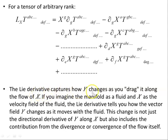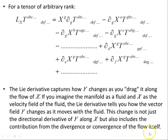The Lie derivative captures how Y changes as you drag it along the flow of X. If you imagine the manifold as a fluid and X as the velocity field of the fluid, the Lie derivative tells you how the vector field Y changes as it moves with the fluid. This change is not just the directional derivative of Y along X, but also includes the contribution from the divergence or convergence of the flow itself — giving you the total change along that flow line.